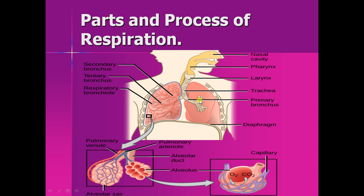Inside the lungs, the bronchus further divides and re-divides into bronchioles. At the ending of each bronchiole, there is a cluster of air sacs. In these air sacs there are small balloon-shaped structures called alveoli — a single one is called an alveolus. Each alveolus is surrounded by blood capillaries, where gaseous exchange takes place.